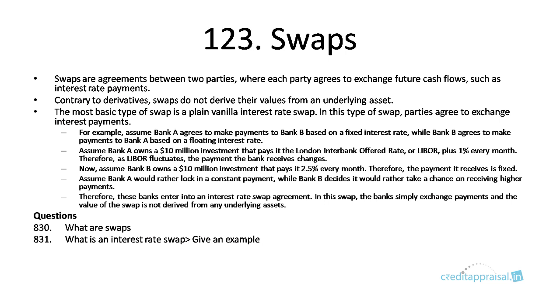In this chapter, we will be discussing swaps. Swaps are agreements between two parties where each party agrees to exchange future cash flows — for example, interest rate payments. Contrary to derivatives, swaps do not derive their value from an underlying asset.